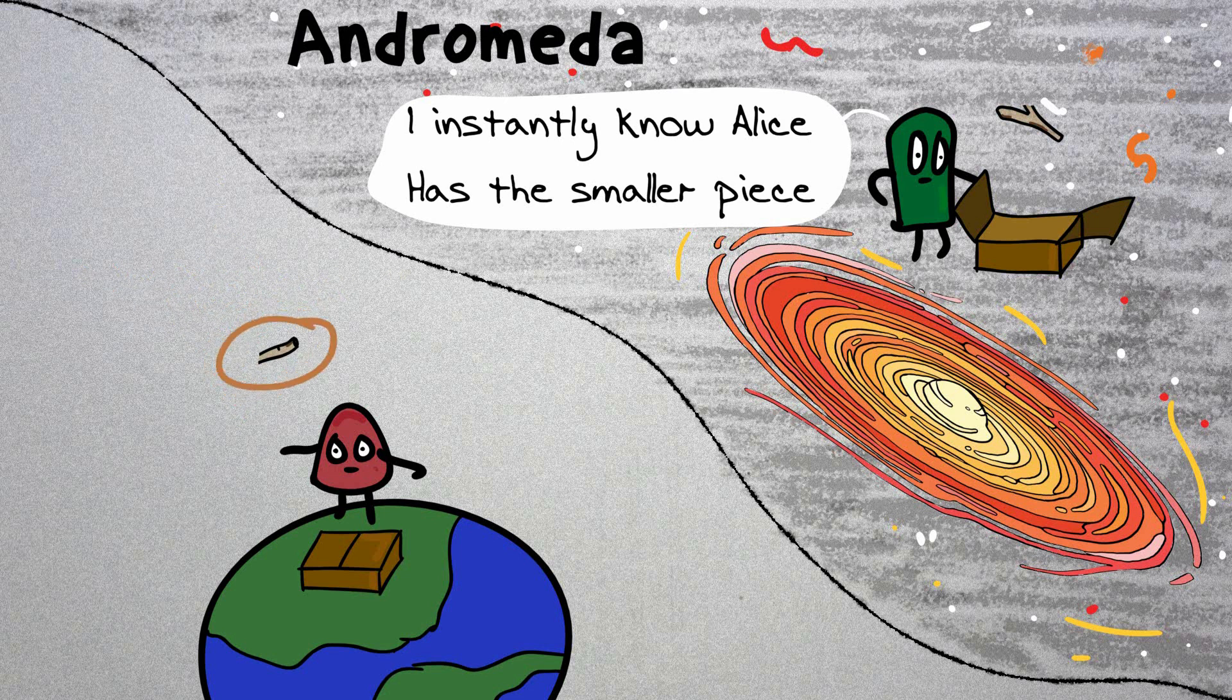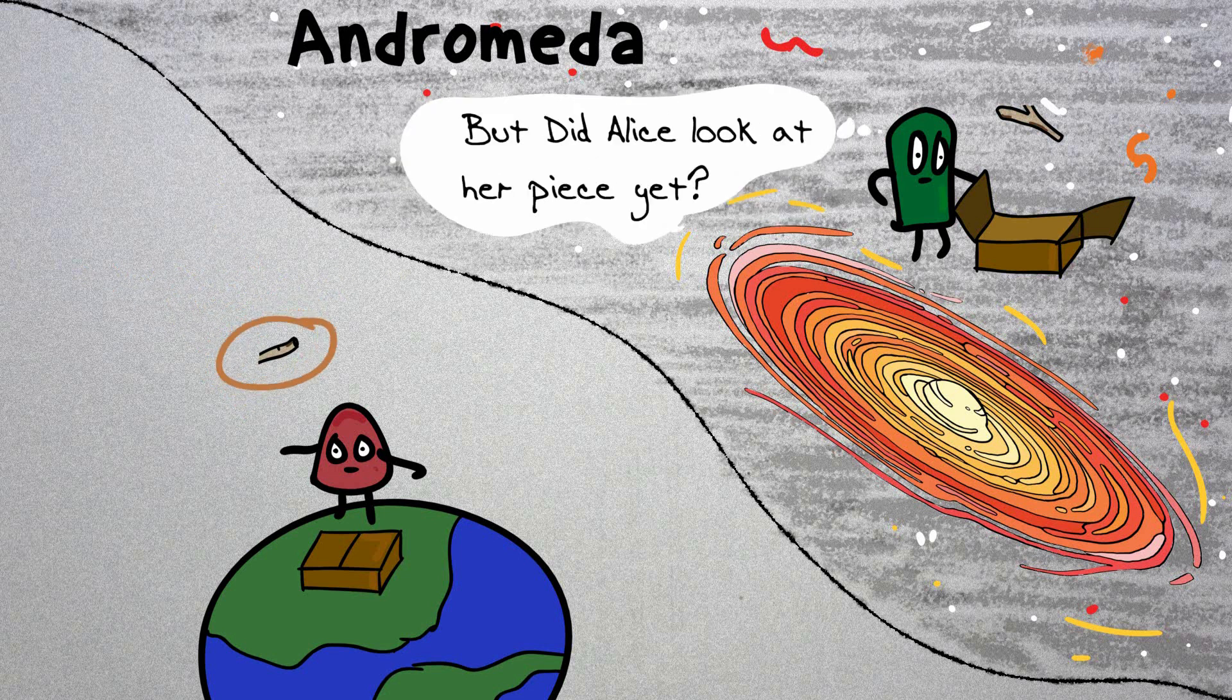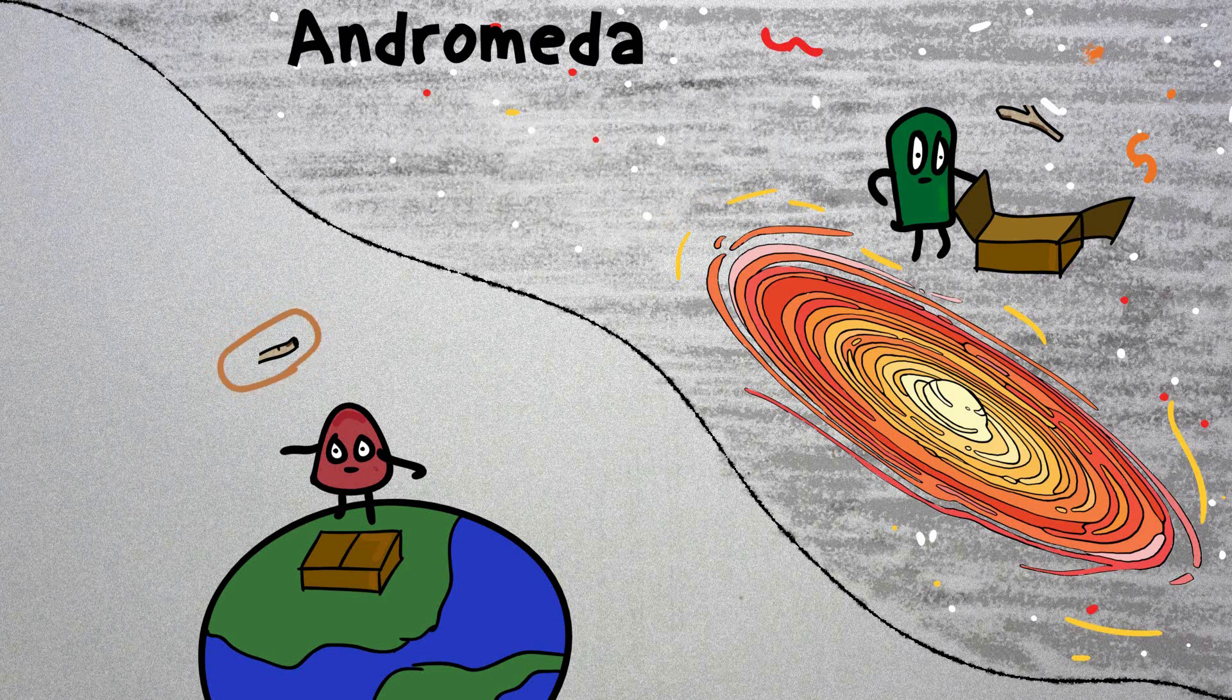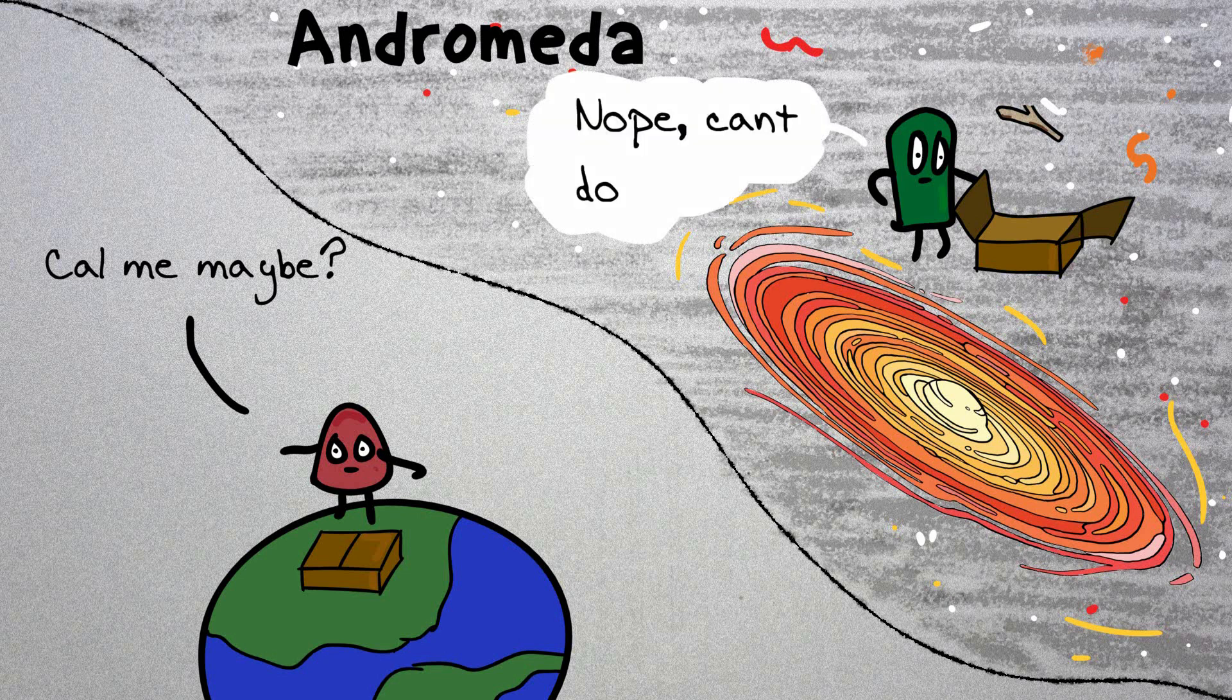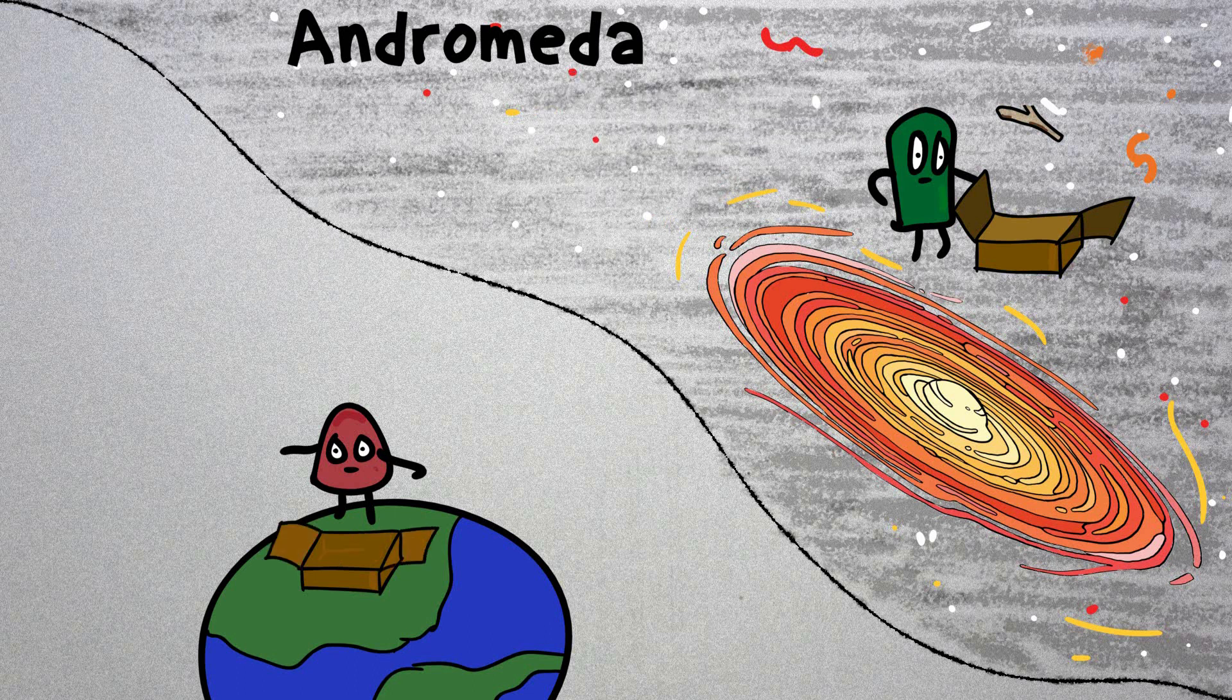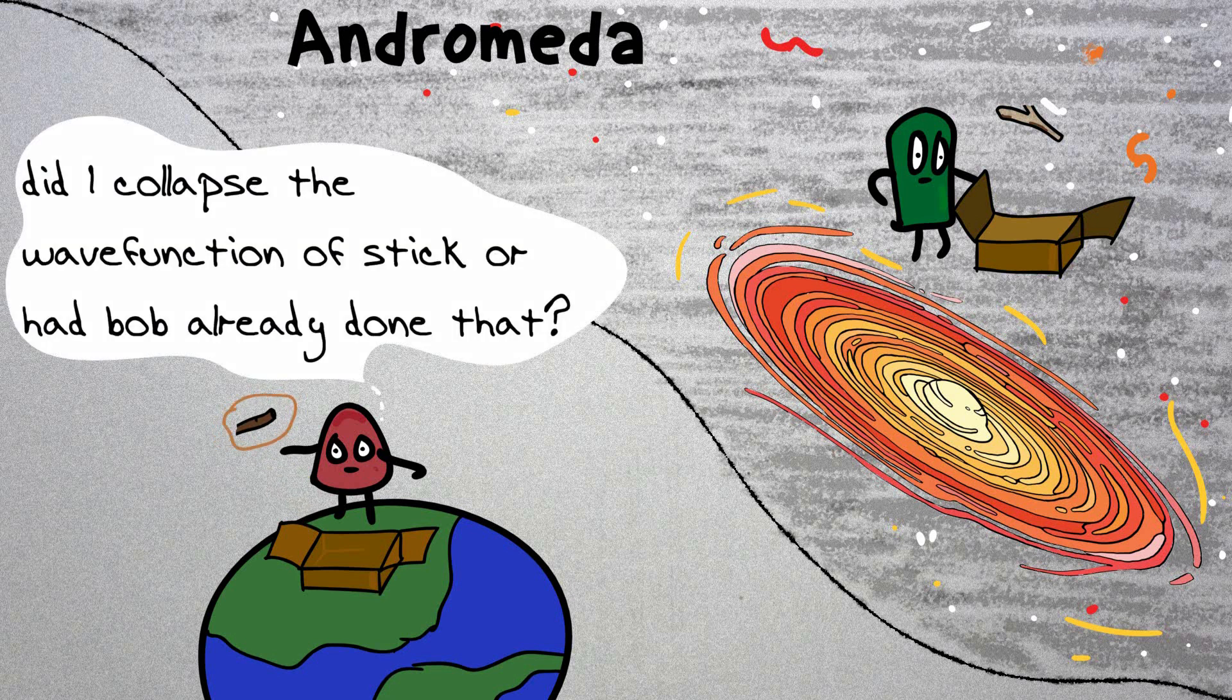He instantaneously knows that Alice has the smaller piece of stick and that's that, but he doesn't know whether Alice had looked at it yet or not. So the big question here is can you communicate from Andromeda to earth this way? No, maybe not. Bigger piece information was communicated nonetheless. So Alice looks at her piece and instantaneously she sees the smaller one, but she doesn't know that it was her who collapsed the wave function.